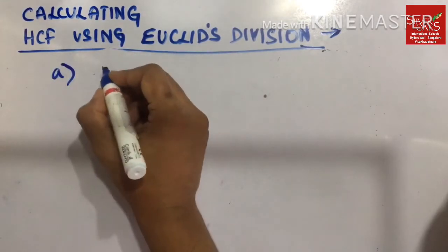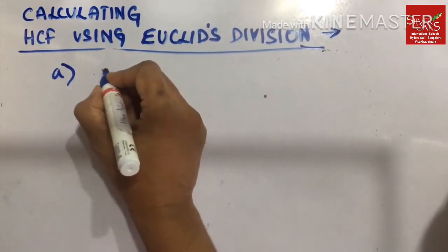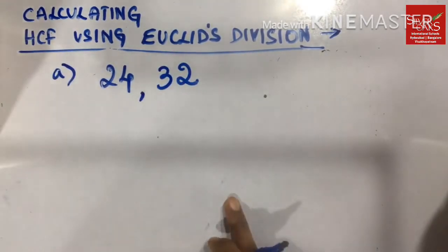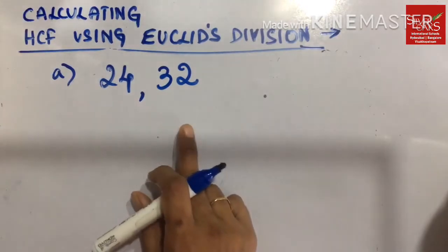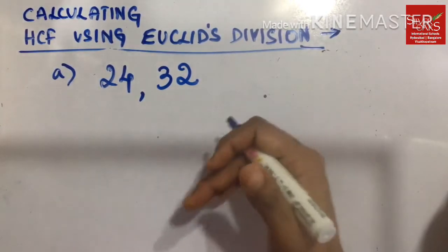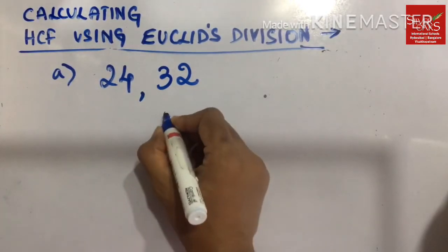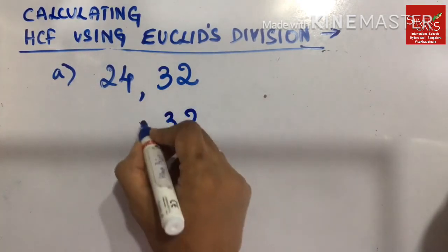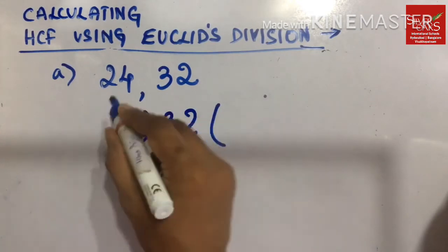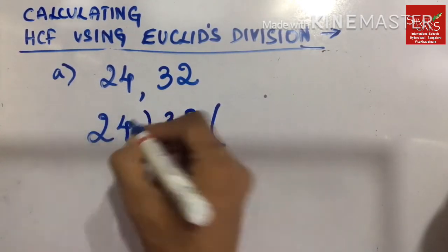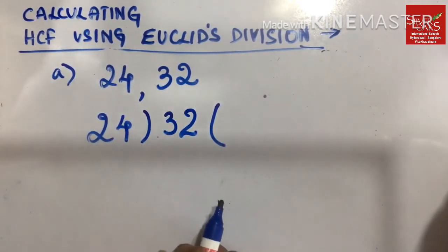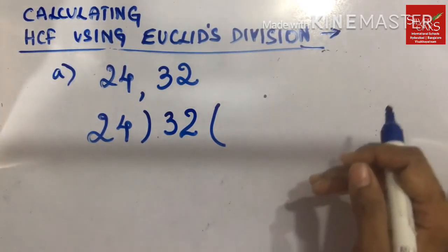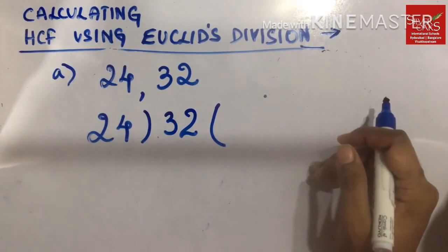If we have a group of numbers, let us first take two numbers. To find the HCF of 24 and 32, we are going to do a division. We write the larger number as our dividend and the smaller number as our divisor, and let us start dividing. Our remainder can be zero or sometimes it may not be zero. Let us see what will happen.